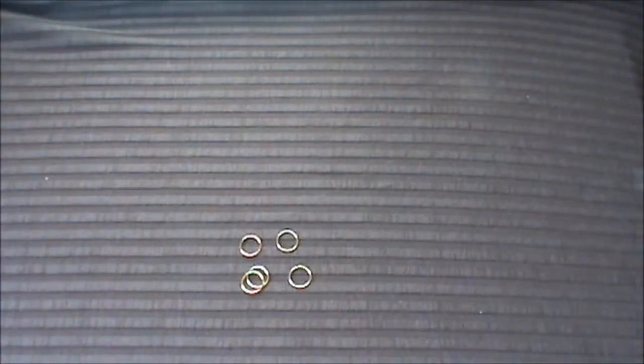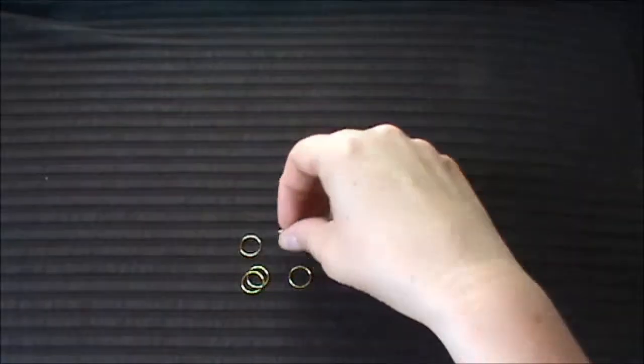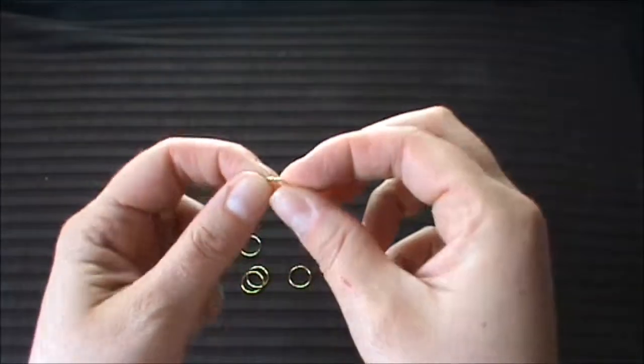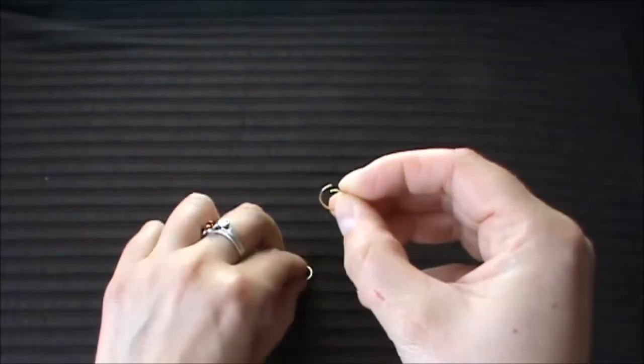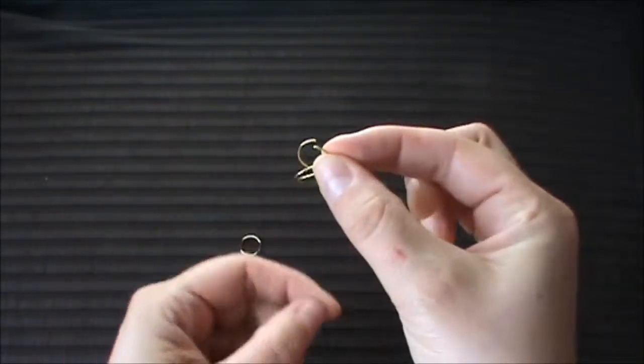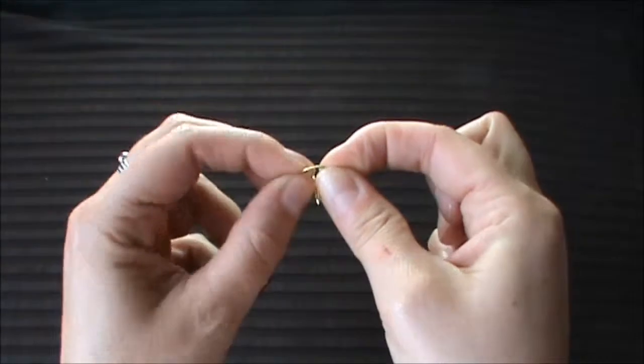Now we have to make the loop element. For this we need the 10mm jump rings. We open the first one gently without distorting the shape and attach the second one to it. Close it.